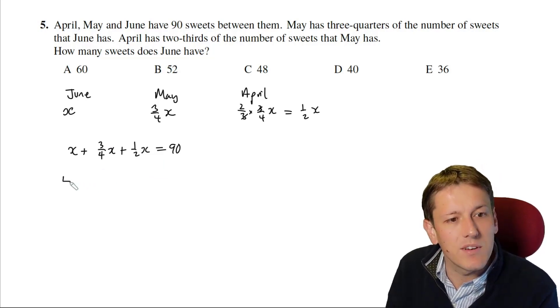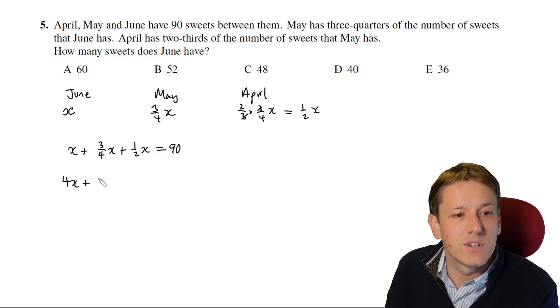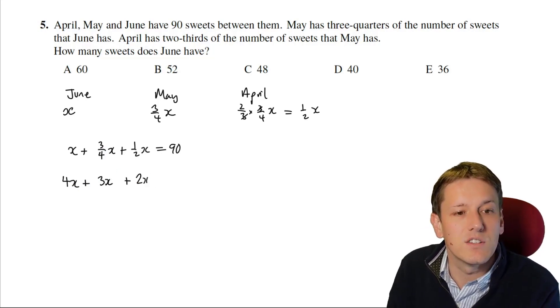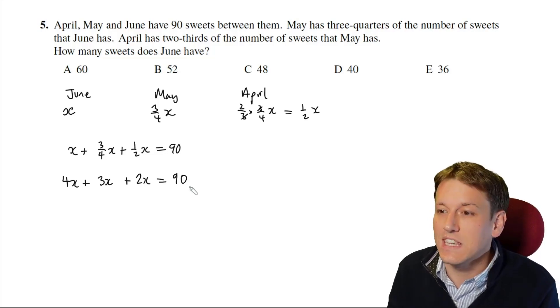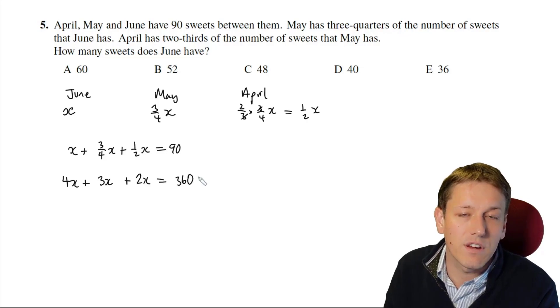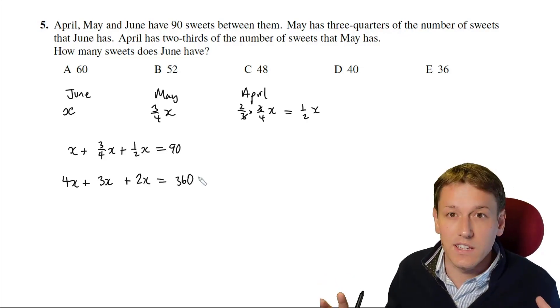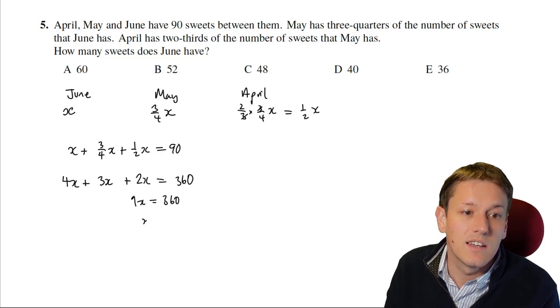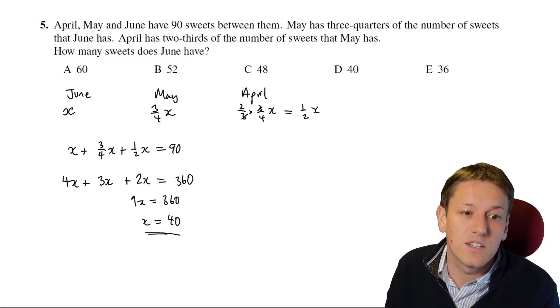My favourite one, and one if you can get really good at can save you time, is actually to multiply this equation through by 4 before you start, rather than trying to combine the X's immediately. If I multiply everything by 4, I get 4X, and then 3 quarters times 4 is 3, so that's 3X, and a half times 4 is 2X. So I get 4X plus 3X plus 2X equals 90, and I've suddenly, oh sorry, I need to times the 90 by 4 as well, to get 360, and suddenly I've got a nice equation. So I've got 9X is equal to 360, and then dividing by 9, I get X equals 40.